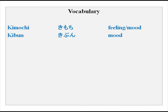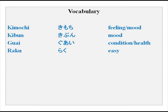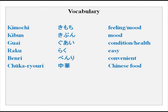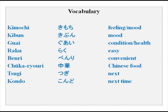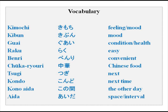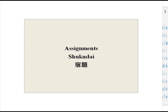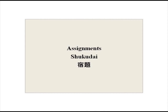Vocabulary: kimochi and kibun almost mean the same thing. Guai is general condition of health. Raku is easy. Benri is convenient to use or to move about. Chuuka is Chinese food or cuisine. Tsugi is next. Kondo is next time. Kono aida is the other day or that particular day. Aida is in between, interval, or space. You can use these in sentences and make your own sentences.